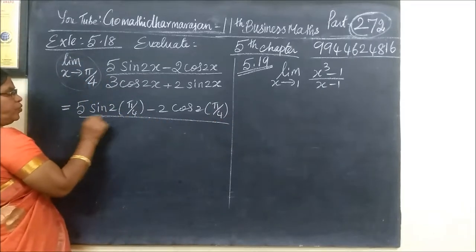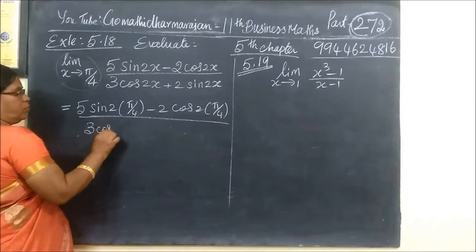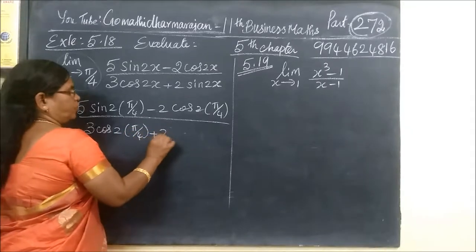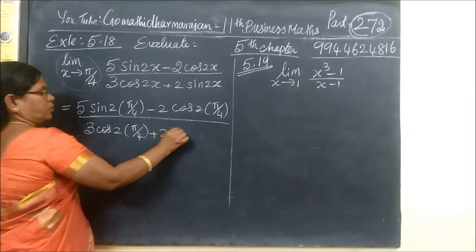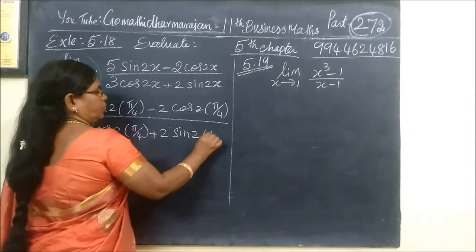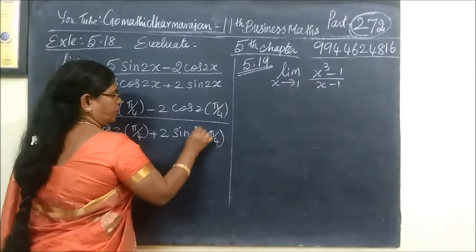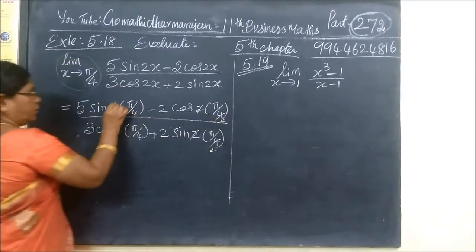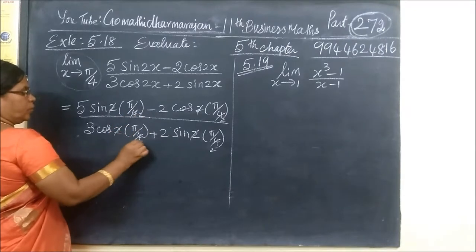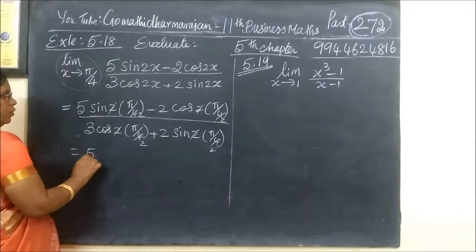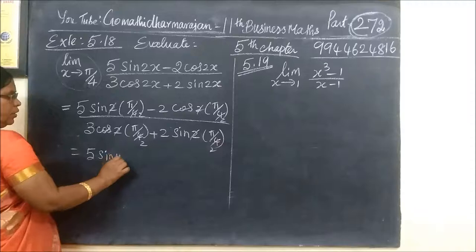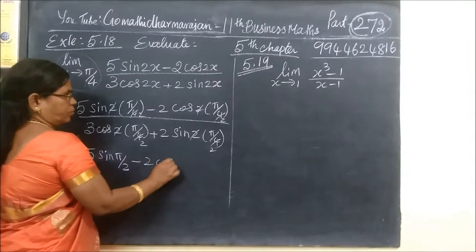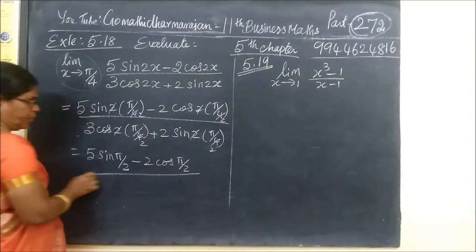So substituting 5π/4: we get 3·cos(2x) at 5π/4, plus 2·sin(2x) at 5π/4. Then the limit — cancel.